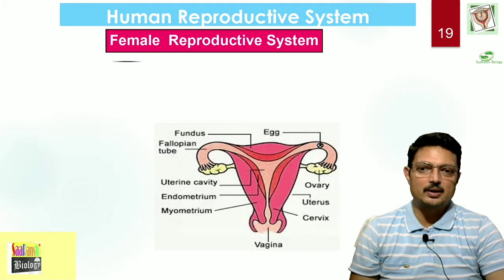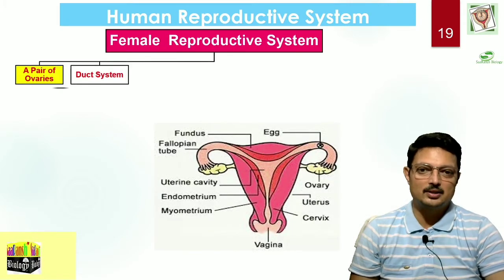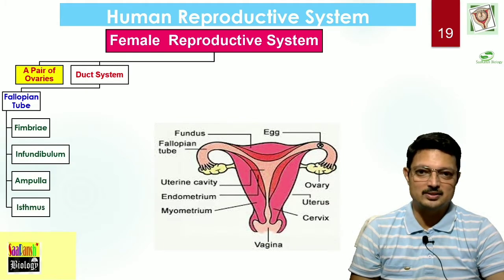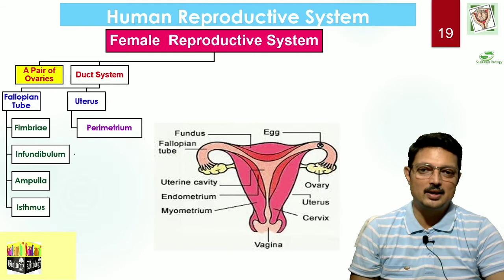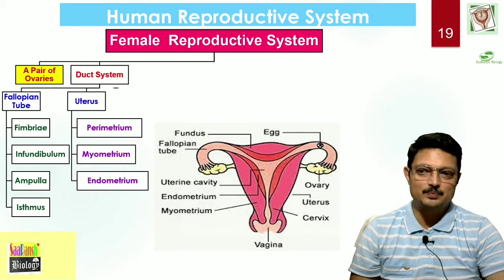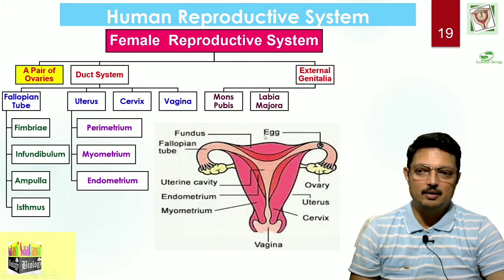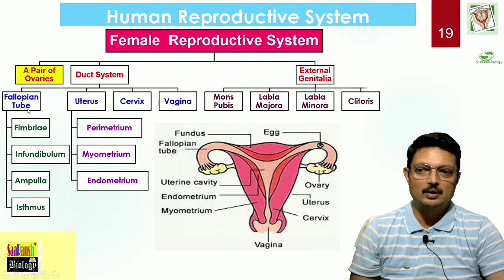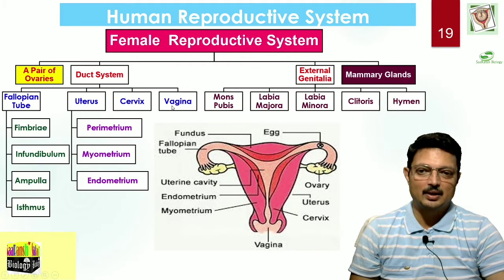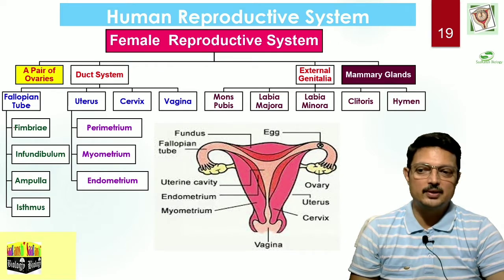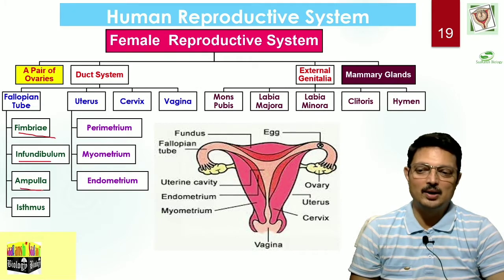When we talk about the female reproductive system, it has a certain architecture. The primary reproductive organ happens to be a pair of ovaries — as in the case of the male, it is a pair of testes. Then we have a duct system, which is made up of fallopian tubes, uterus, cervix, and vagina. In the flowchart, the fallopian tube is further regionated as fimbria, infundibulum, ampulla, and isthmus.